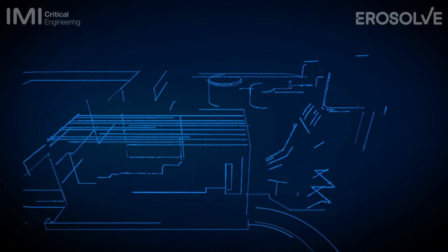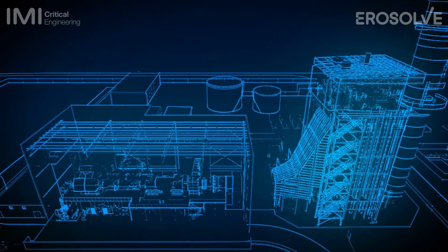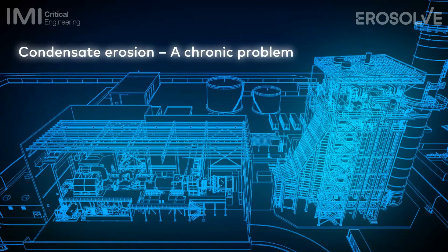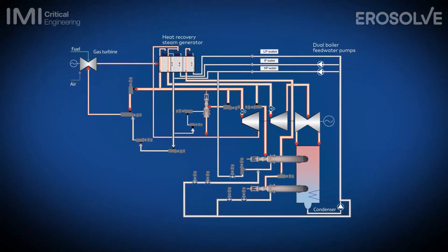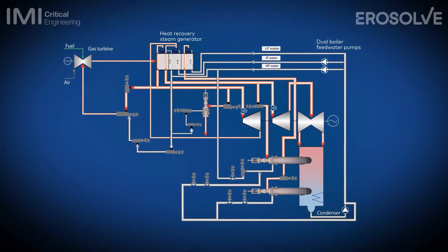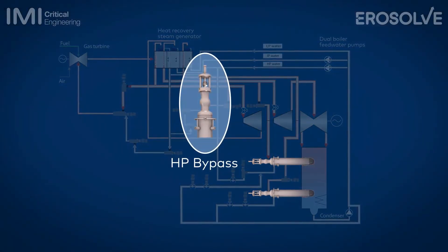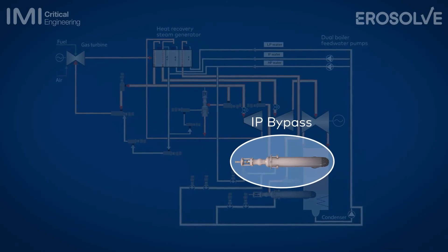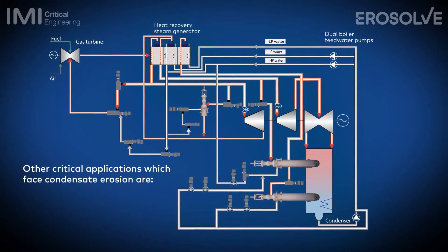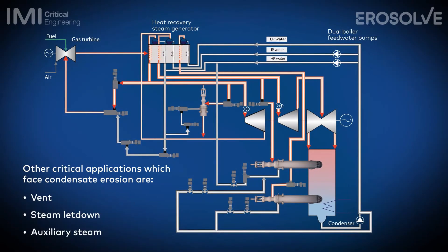One of the chronic problems that operations and maintenance people in power plants and steam utilities across the world face is condensate erosion of valves installed in critical steam applications. Here is a schematic layout of a typical combined cycle power plant. Critical steam valve applications prone to condensate erosion are high pressure bypass, intermediate pressure bypass, low pressure bypass, vent steam, let-down, and auxiliary steam.